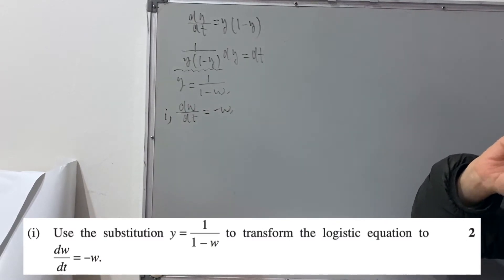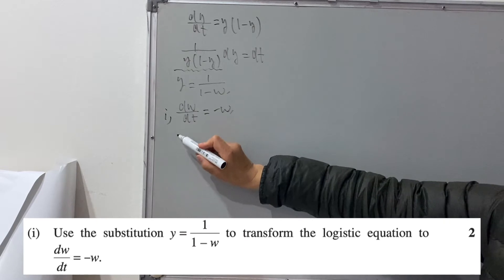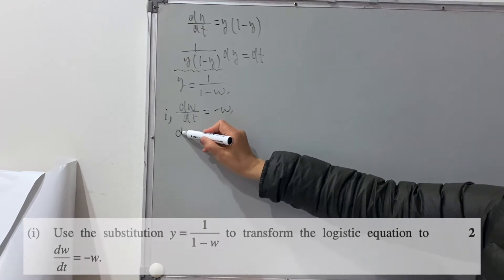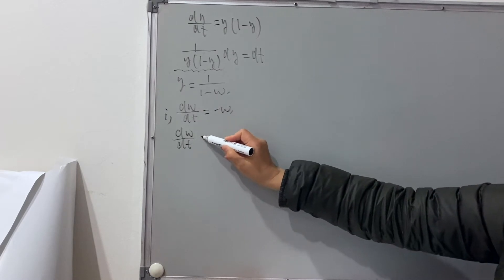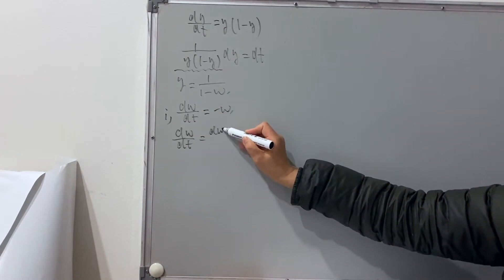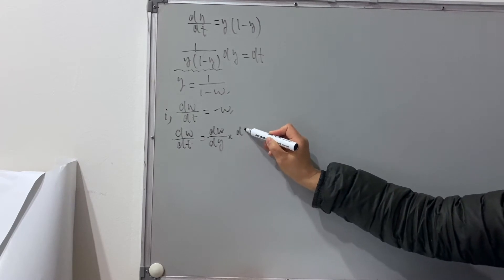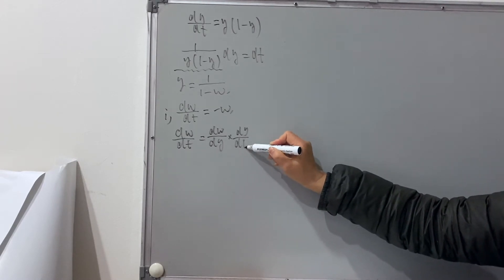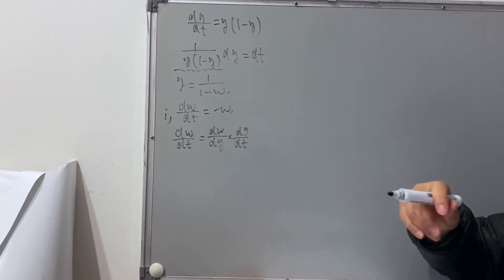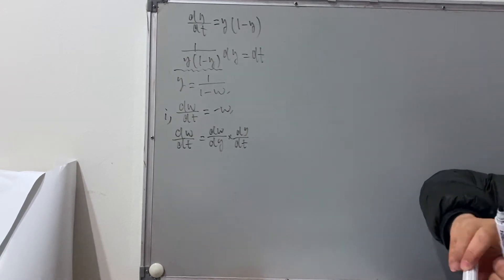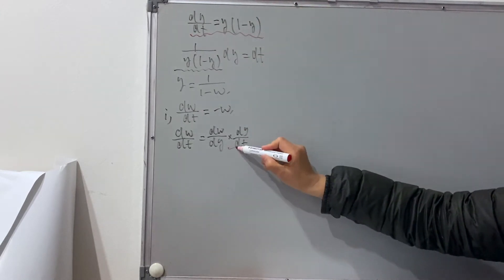So how are we going to solve these equations? We're going to use the differentiation chain rule. So dw/dt equals dw/dy times dy/dt. And the dy/dt is already given, so we can substitute it in here.